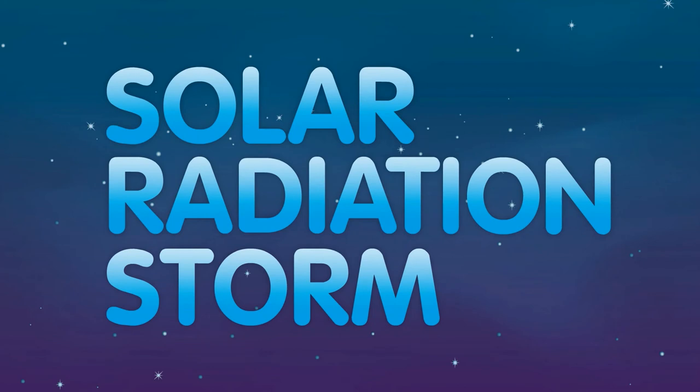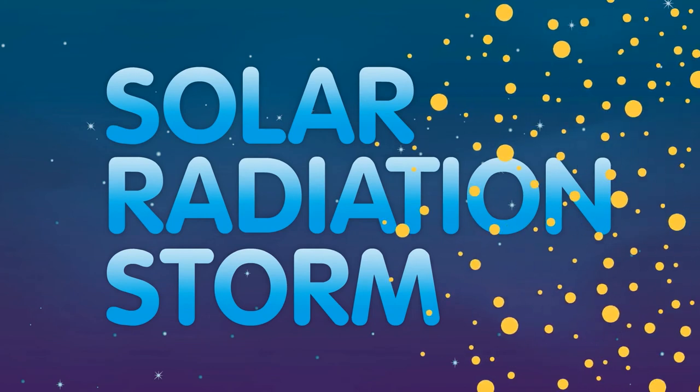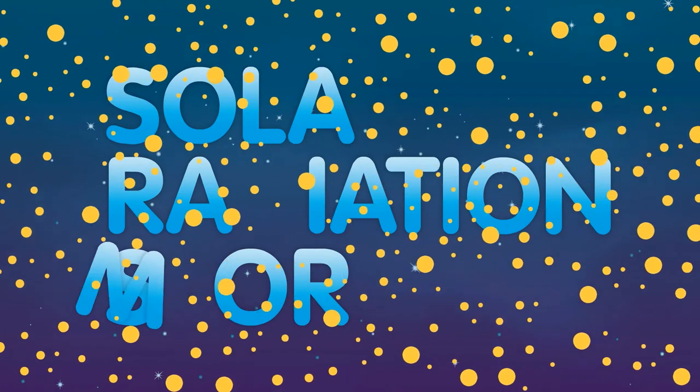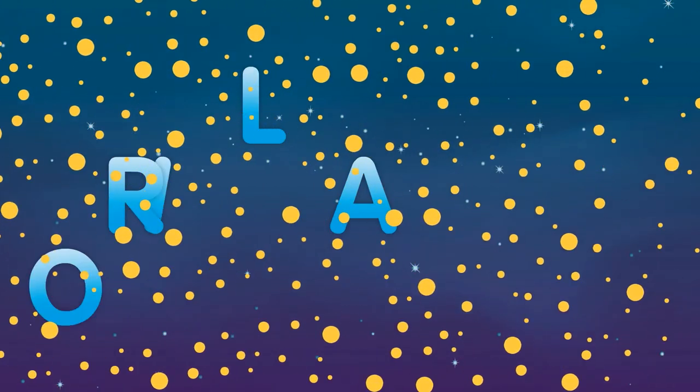Another type of storm is a solar radiation storm. This takes place when a burst of particles from the Sun happens at such high speed and energy that they enter the Earth's atmosphere, for example, as a result of a solar flare.